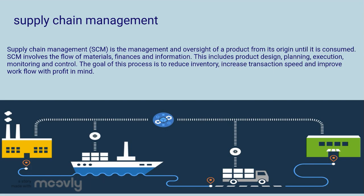Before moving to the supply chain management of Dangote Cement, let's first define what supply chain management is. Supply chain management is the management and oversight of a product from its origin until it is consumed, and involves the flow of materials, finances, and information. This includes product design, planning, execution, monitoring, and controlling. The goal is to reduce inventory, increase transaction speed, and improve workflow with profit in mind.